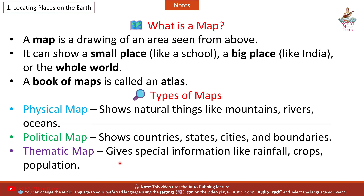Third, Thematic Map: gives special information like rainfall, crops, and population.